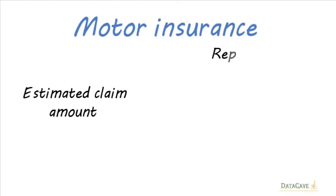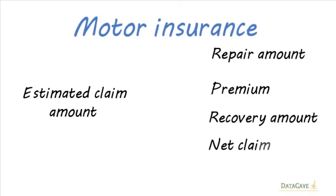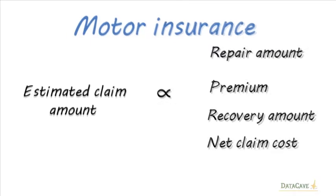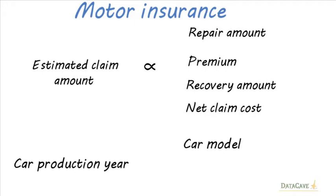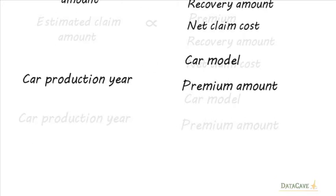In motor insurance, the estimated claim amount, repair amount, premium, recovery amount, and net claim cost amount are correlated. A correlation also occurs between car production year, car model, and premium amount.